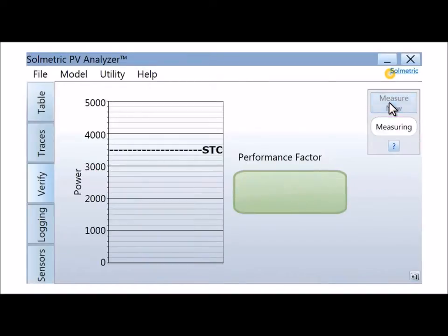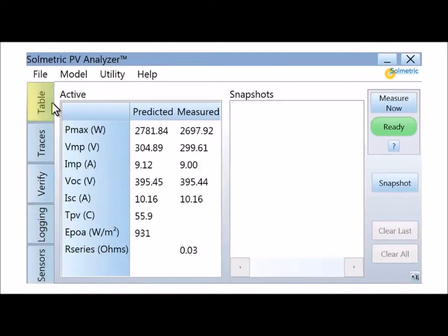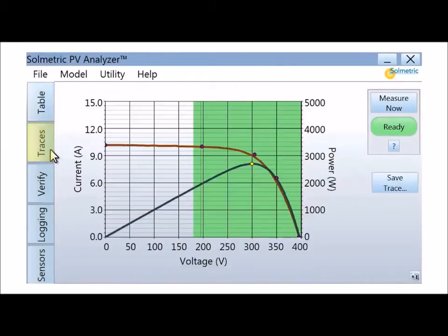The table tab displays the measured and predicted parameters including short circuit current, open circuit voltage, and the maximum power point. The traces tab displays the measured IV curve and the power curve. The five dots represent the predicted shape of the IV curve based on the detailed performance model.